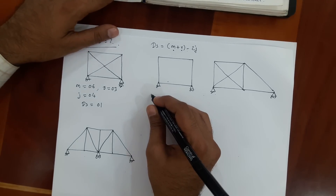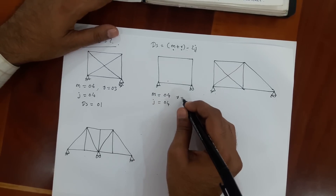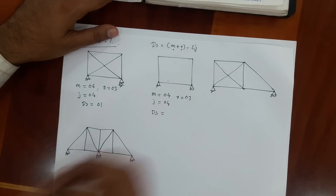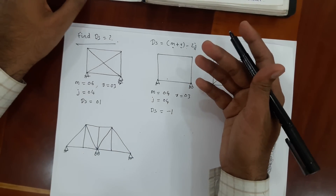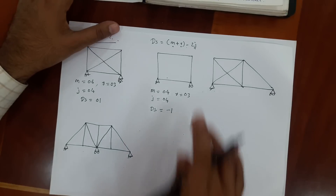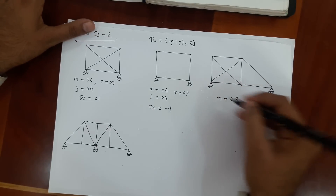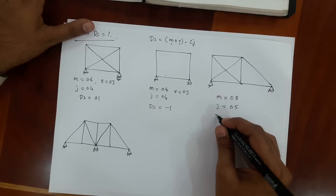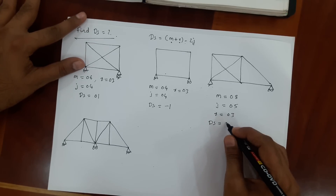For this next problem, number of members are 4, joints are also 4, reactions are 3 — here 2 and this is a roller support giving 1. DS will be minus 1. When you get a negative value, it means the structure is unstable. I have discussed the stability of the structure in the previous video. For the following structure, M equals 8 — you can count it — joints are 5 in number, reactions are 3. DS for this structure, if you calculate, you will get 1.